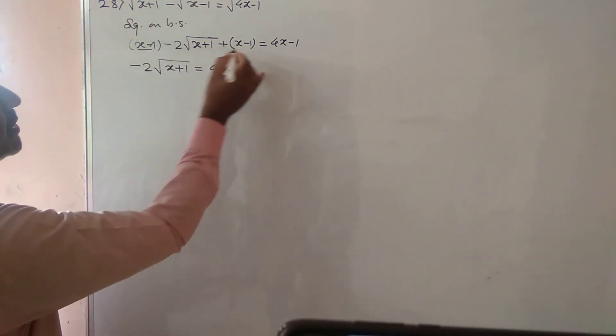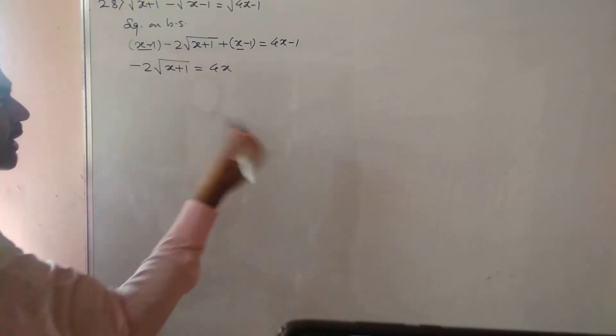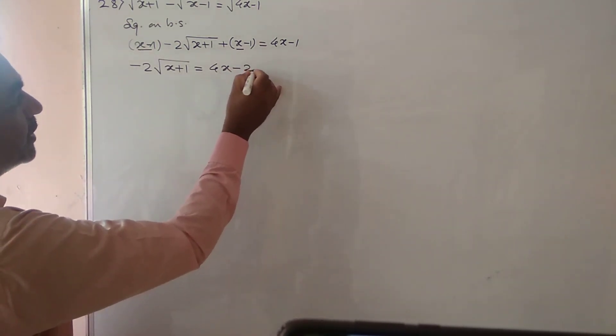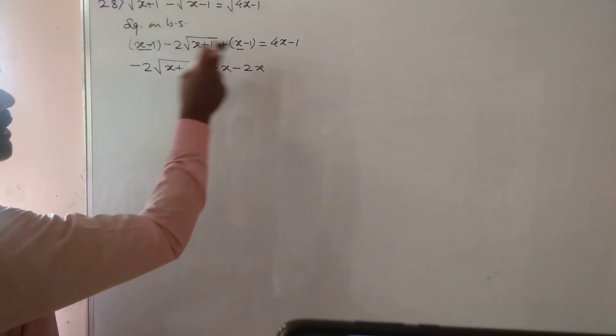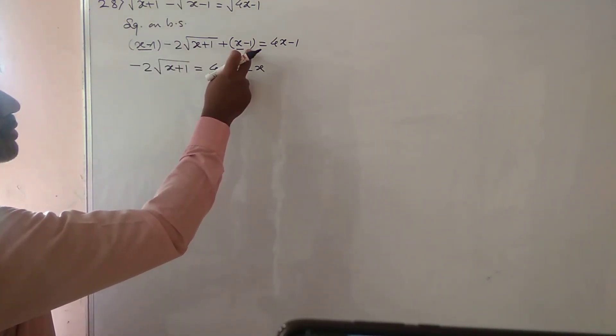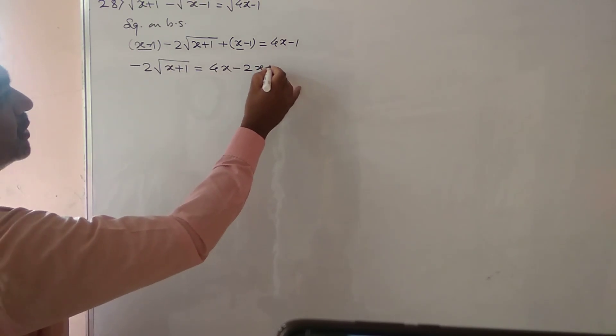Now this x plus x, it is 2x. Ho jayega right hand side per jayega to ho jayega minus 2x. Clear? And this minus 1 minus 1, it is minus 2. Right hand side per jayega to ho jayega plus 2.